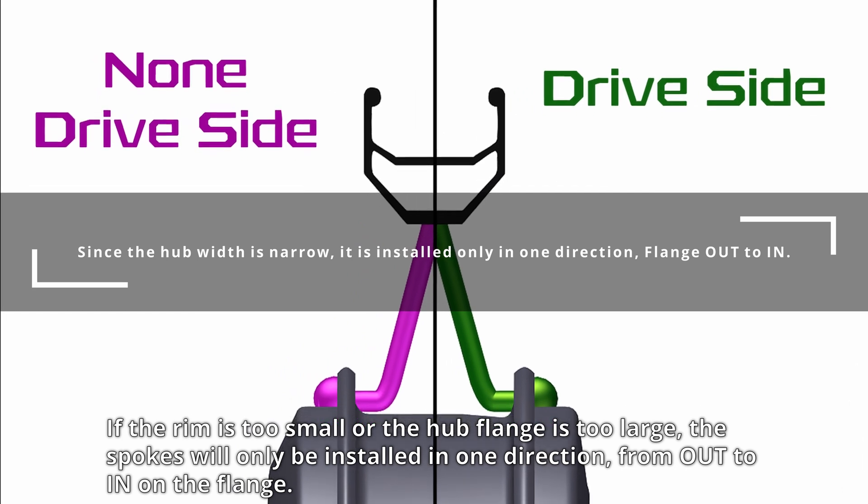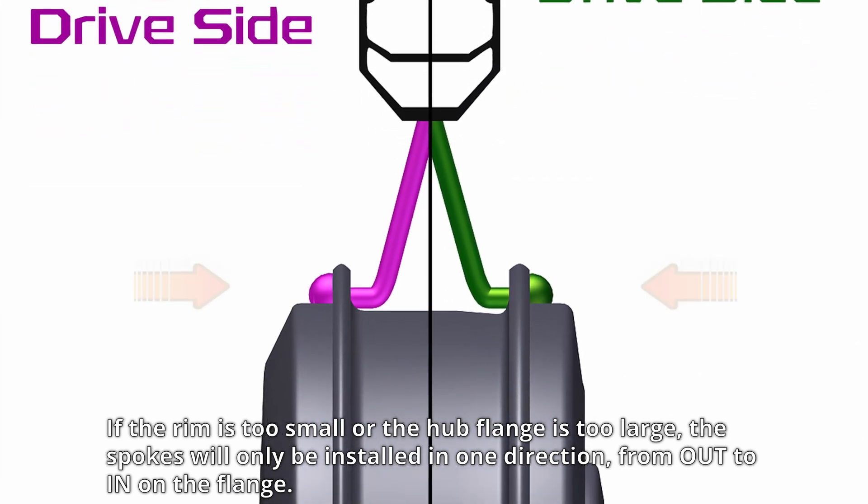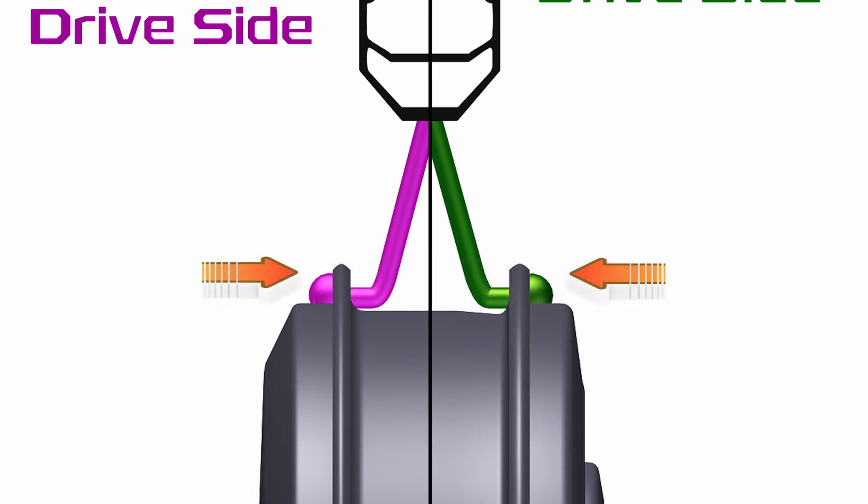If the rim is too small or the hub flange is too large, the spokes will only be installed in one direction from out to in on the flange.